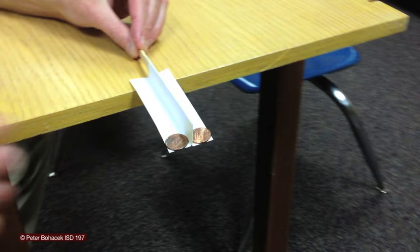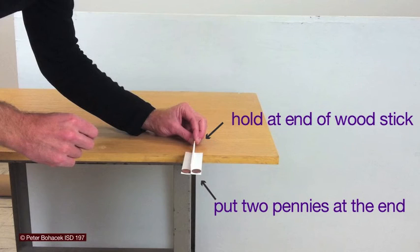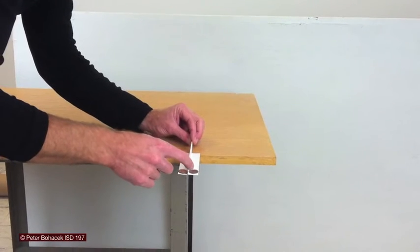Then take your index finger and grab the very end of the free fall flicker and pull it back towards you, and flick it to release it and fling the pennies.